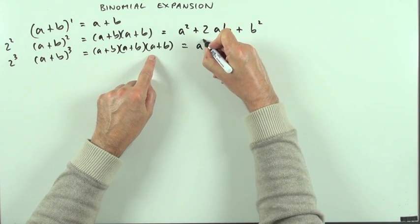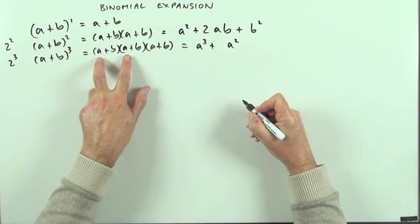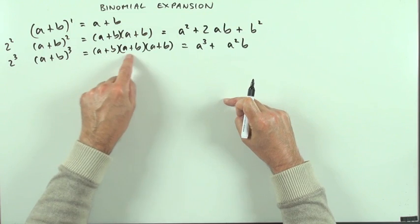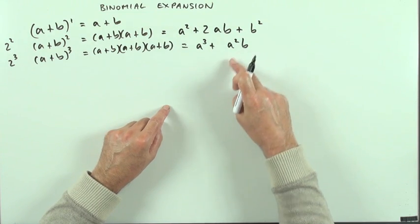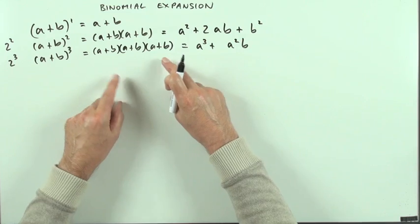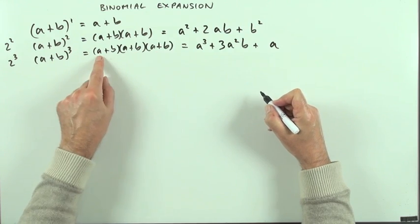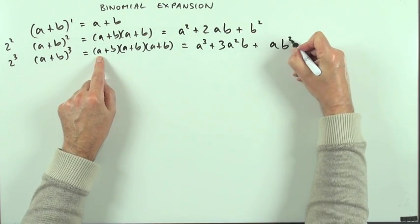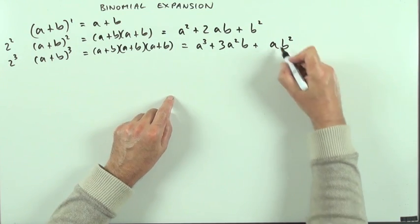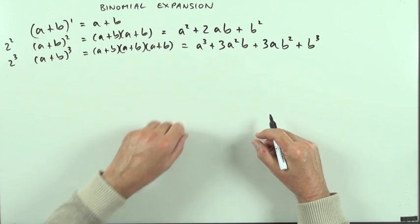There's only one way of making a cubed — take the a from each bracket, so no b's used at all. What about a squared? That means I take a from two of the brackets, and the third will have to give a b, because there have to be 3 factors altogether. How many ways of choosing 2 from 3? That's 3. Then a on its own — there are 3 ways of choosing just 1 a. And lastly, b cubed — there's only one way: you take all the b's. So: 1, 3, 3, 1.